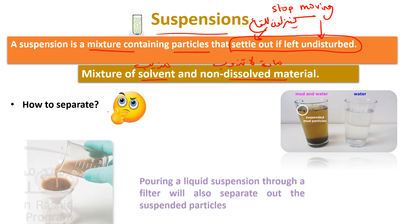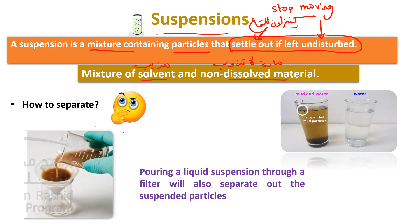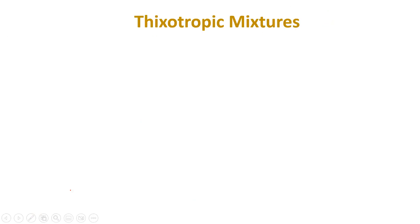How do we separate a suspension? We use filter paper. The filter catches the sand and the water passes through. That's a suspension.